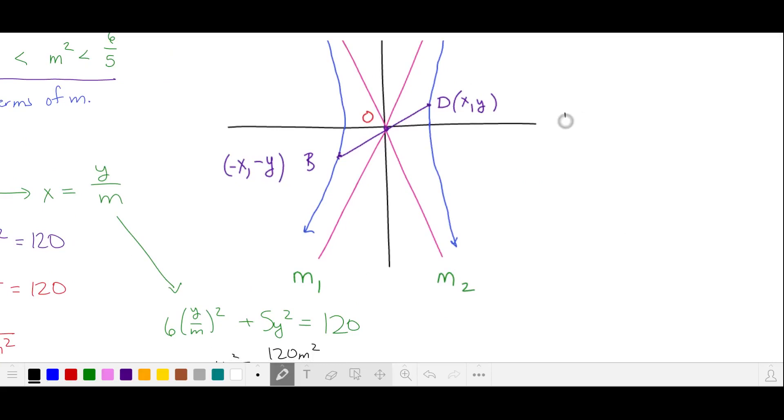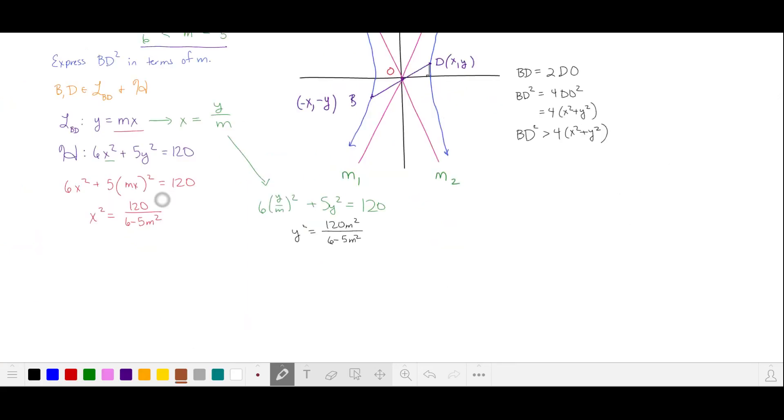Looking back at our graph, we have that the distance from B to D is twice the distance from D to the origin, squaring both sides. And DO is the hypotenuse of this right triangle here. So it has length x squared plus y squared. So we're looking for all values of BD squared that are greater than this. We can now use our values of x squared and y squared that we found and substitute.